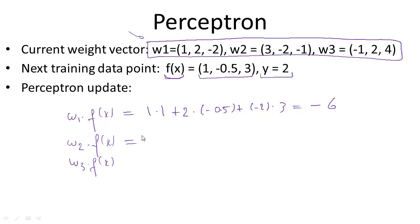The inner product of w2 with feature vector f(x) is 3×1 - 2×(-0.5) - 1×3, which gives us 1. And the inner product of w3 with f(x) is -1×1 + 2×(-0.5) + 4×3, which is 10.